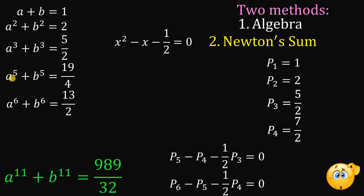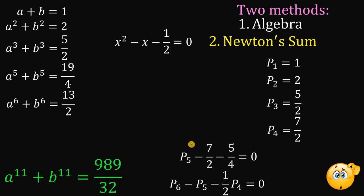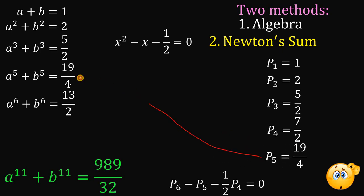To get p sub 5 — or a raised to the 5th power plus b raised to the 5th power — we use p sub 4 equals 7 over 2 and p sub 3 equals 5 over 2. Simplifying: negative 1 half times 5 over 2 gives negative 5 over 4. This leads to negative 19 over 4. Adding 19 over 4 to both sides, p sub 5 equals 19 over 4, which matches what we found using algebra.